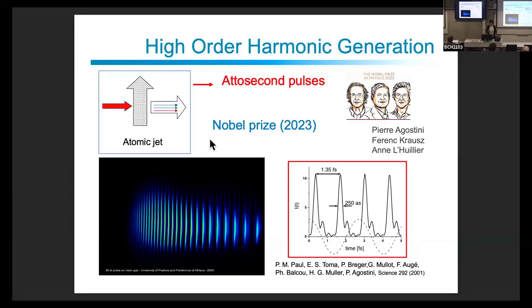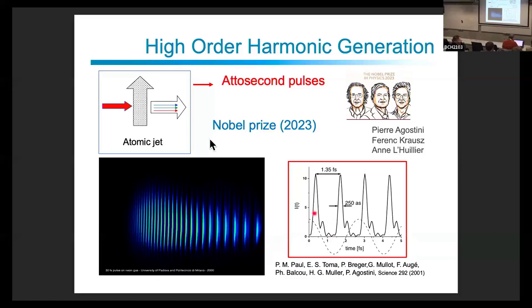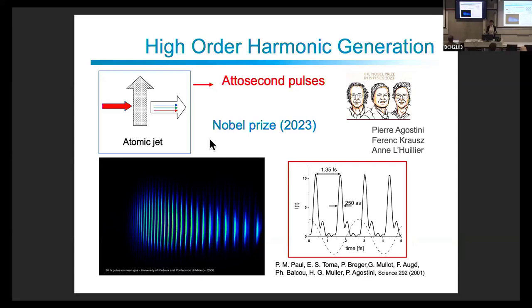This became famous with the 2023 Nobel Prize awarded to Pierre Agostini and colleagues for the emission of attosecond pulses using HHG. The first pulse that was deduced from measurement was 250 attoseconds. An attosecond is 10⁻¹⁸ seconds — really the timescale of electronic processes in matter.